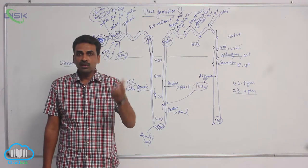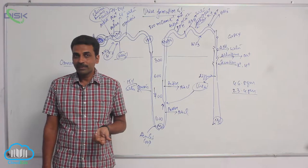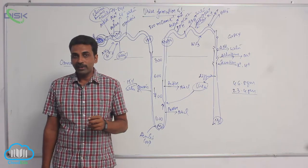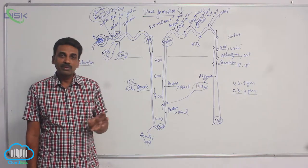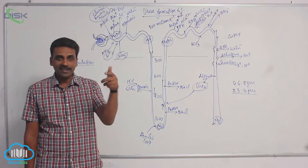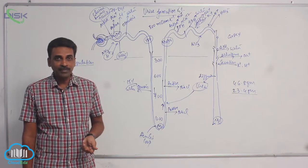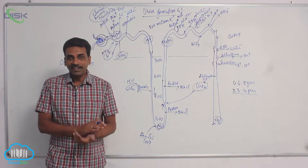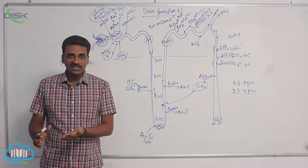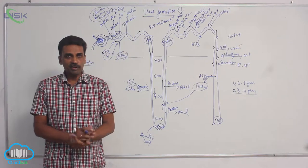And kidneys also produce thrombopoietin. Thrombopoietin - thrombocytes means blood platelets. So production of blood platelets occurs with the help of thrombopoietin. And vitamin D is activated inside kidneys. So kidneys, they are not just excretory in function, they have got multiple functions.